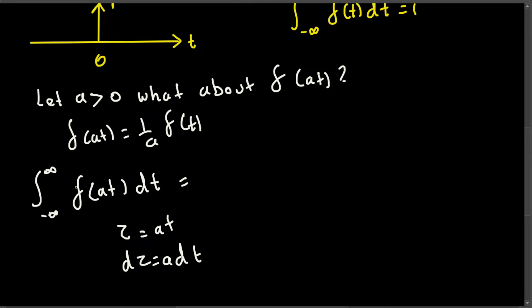So if I rewrite this in terms of tau, this is going to look like negative infinity to infinity delta of tau d tau divided by a, because if d tau is a dt, then dt is d tau divided by a.